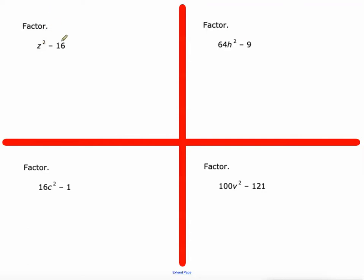Perfect square minus perfect square. Z squared is a perfect square, and 16 is a perfect square. So, this is going to fit what we call the sum and difference pattern. Z plus 4 times z minus 4. And that's it.